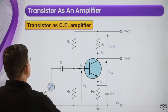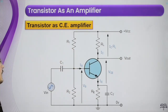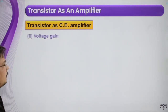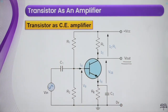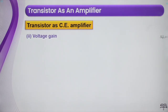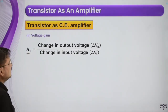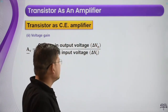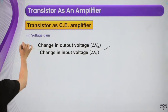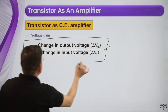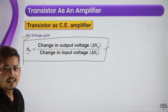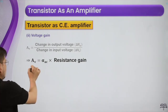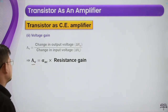Now if we talk about the common emitter transistor, when we talk about voltage gain: the voltage gain is denoted as A_V and is given as the change in output voltage divided by the change in input voltage. That ratio defines the voltage gain for the transistor as a common emitter amplifier.